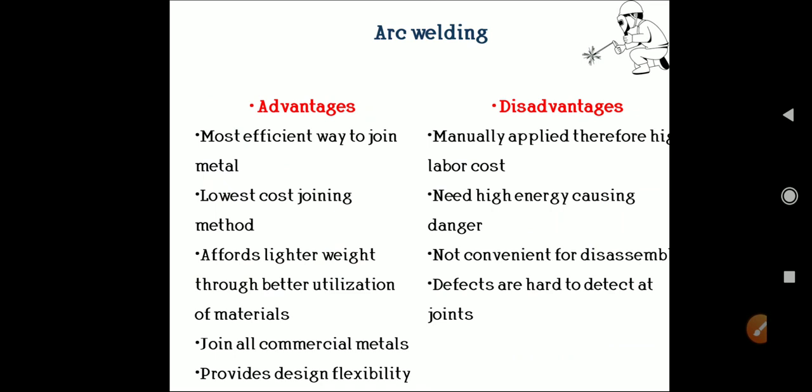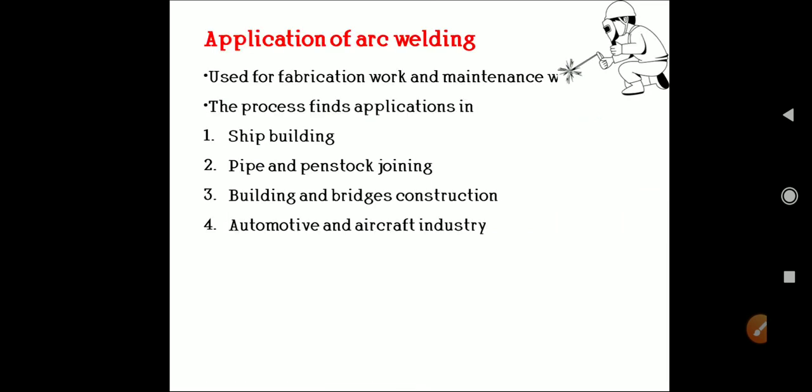Advantages of arc welding: it is the most efficient way to join metals, the lowest cost joining method, affords lighter weight through better utilization of materials, joins all commercial metals, and provides design flexibility. Disadvantages: it is manually applied, therefore labor cost is high; needs high energy causing danger; not convenient for disassembly; and defects are hard to detect at the joint. Applications of arc welding include fabrication work, maintenance work, shipbuilding, pipe and penstock joining, building and bridge construction, automation, automotive, and aircraft industries. Stay connected for the next video on shielded metal arc welding and submerged arc welding. Thank you.